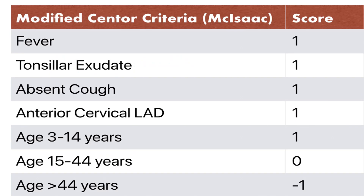In the modified Centor criteria, we give one point for fever, one point for tonsillar exudate, one point for absent cough, one point for anterior cervical lymphadenopathy, and one point for age between 3 to 14 years. If the age is between 15 to 44 years, we give 0, and if the age is more than 44 years, we give minus 1.